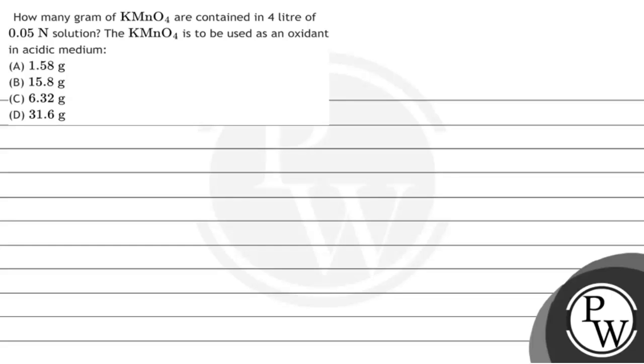Hello, let's look at this question which says: how many grams of KMnO4 are contained in 4 liters of 0.05 normal solution? The KMnO4 is to be used as an oxidant in acidic medium. Options are 1.58 grams, 15.8 grams, 6.32 grams, or 31.6 grams. So we have to find out that if we have a solution which is 4 liters of 0.05 normal solution, then how many grams of KMnO4 will be present.